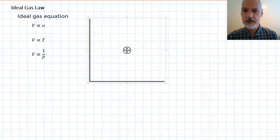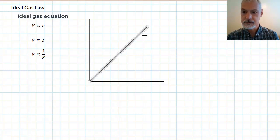So volume being proportional to the number of moles would give us a straight line, plotting on this axis the volume, and this axis the number of moles.